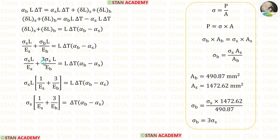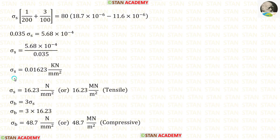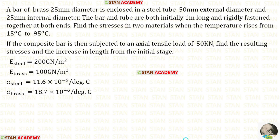Substituting sigma_b equals 3 × sigma_s into the expression and factoring out sigma_s and L, we can cancel L. Then applying the values of E_s, E_b, delta_T, alpha_b, and alpha_s, after calculation we get sigma_s, which is tensile, expressed in newton per mm squared or megapascal. Since sigma_b equals 3 × sigma_s, multiplying gives sigma_b which is compressive. This completes the first part of the question.